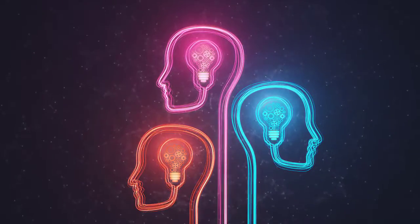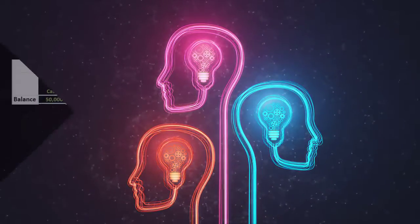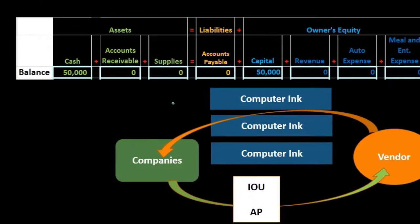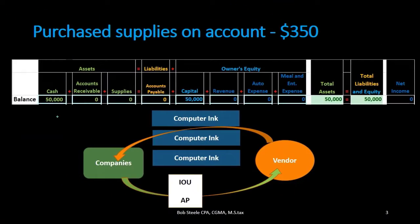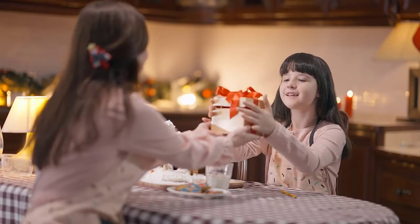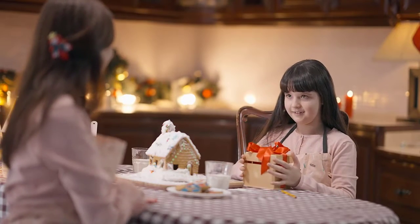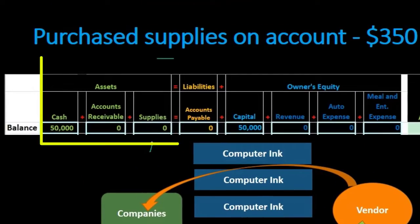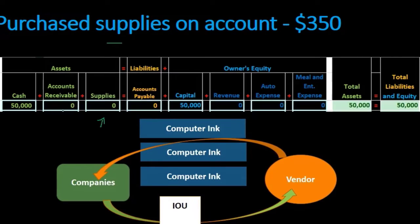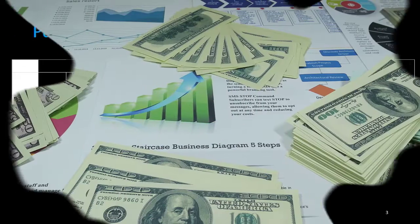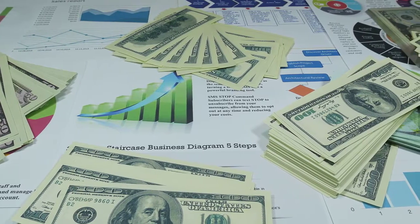First transaction: purchase supplies on account. Going through our questions — is cash affected? No, because we purchased it on account. What did we receive? Supplies. Supplies is an asset, so the asset goes up because we received more. The only question remaining is what the other account is — it's not a decrease to cash since we didn't pay cash, so something else must be happening.